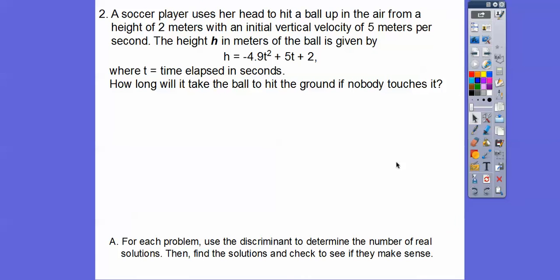So here's another one. I've just put the directions down there. It says, for each problem, use a discriminant to determine the number of real solutions and find the solutions. So here we go. A soccer player uses her head to hit the ball up in the air at the height of 2 meters with an initial vertical velocity of 5 meters. That's what this is right here, per second. So the height in meters of the ball is given by this equation right here, where t is time in seconds. So how long will it take for the ball to hit the ground if nobody touches it? So that's when the ball is going to be, the height is going to be at 0 right there. So let's go ahead and find the discriminant right there.